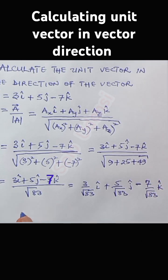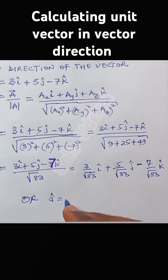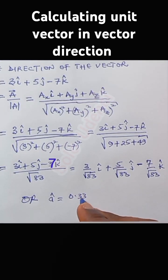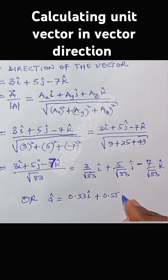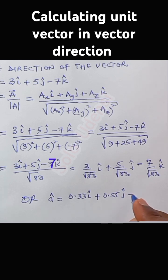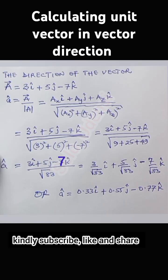Or the answer can be expressed in decimal form as approximately 0.33î + 0.55ĵ − 0.77k̂ to two significant figures. That's how to do it.